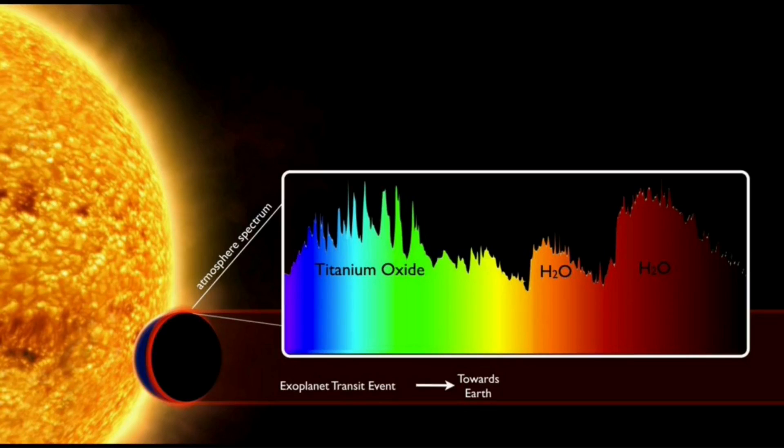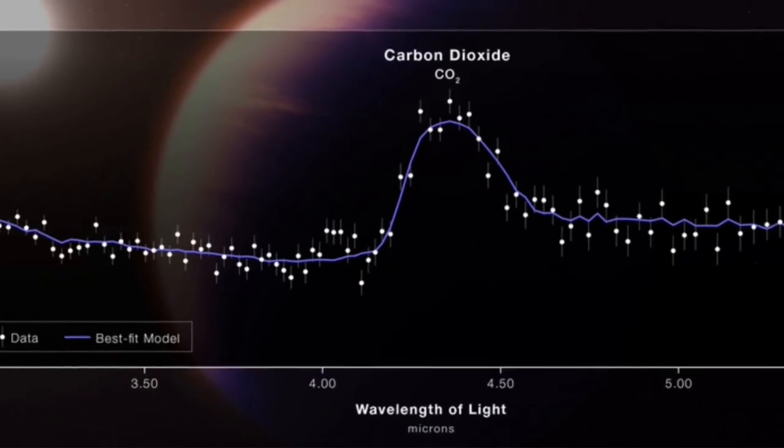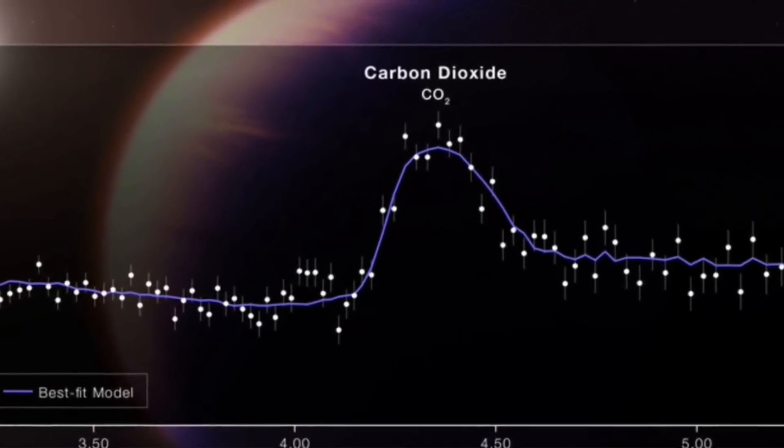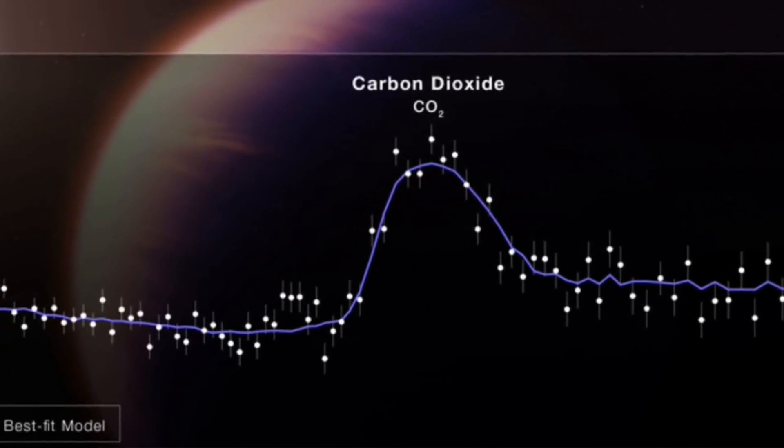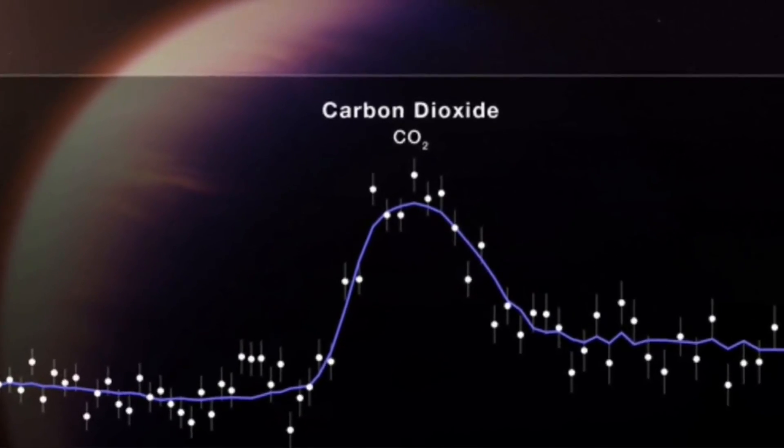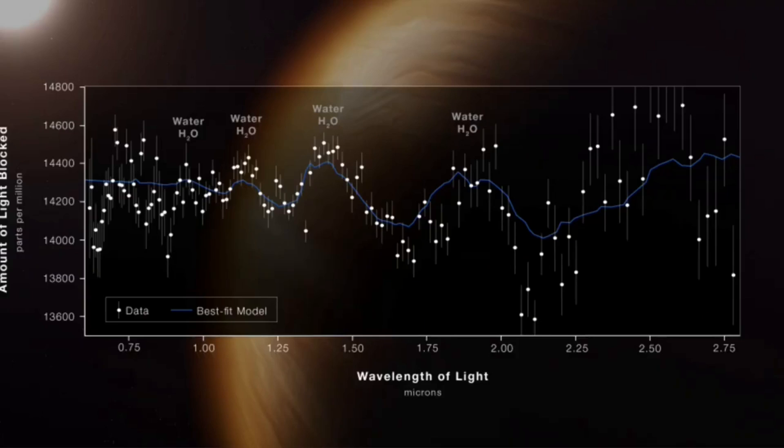The official name of WASP-39b is Bocaprince, which is also dubbed Hot Jupiter Extrasolar Planet. The mass of this hot giant is roughly same as our Saturn and 0.28 times of our own Jupiter. Its diameter is 1.27 times that of Jupiter.